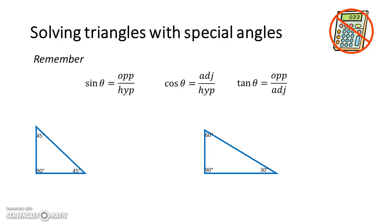Hello everybody. This is another video in a series of videos on trigonometry. This one's about solving triangles with special angles, which we do without a calculator. The special angles are 45 degrees, 60 and 30 degrees.